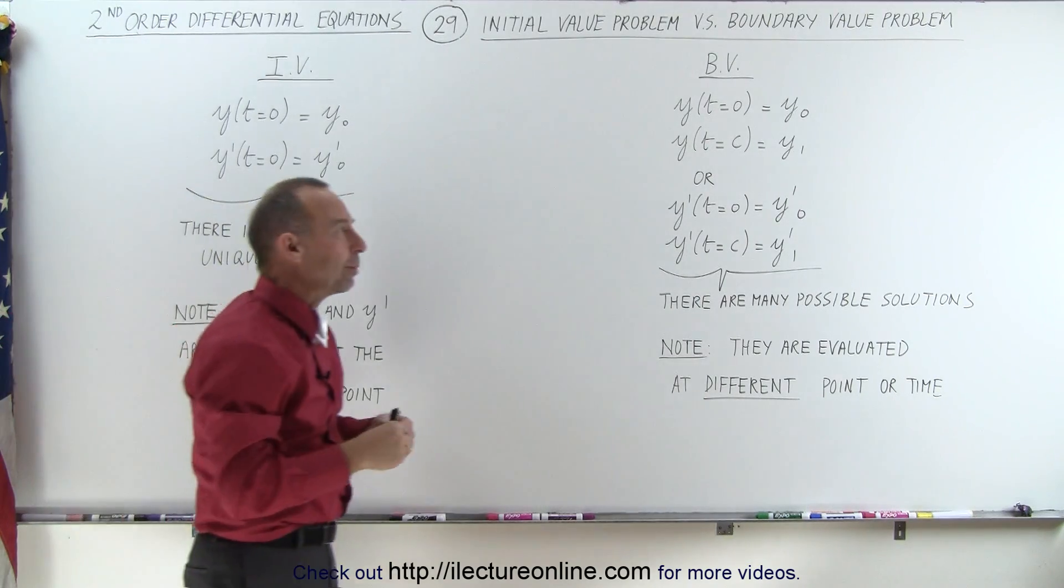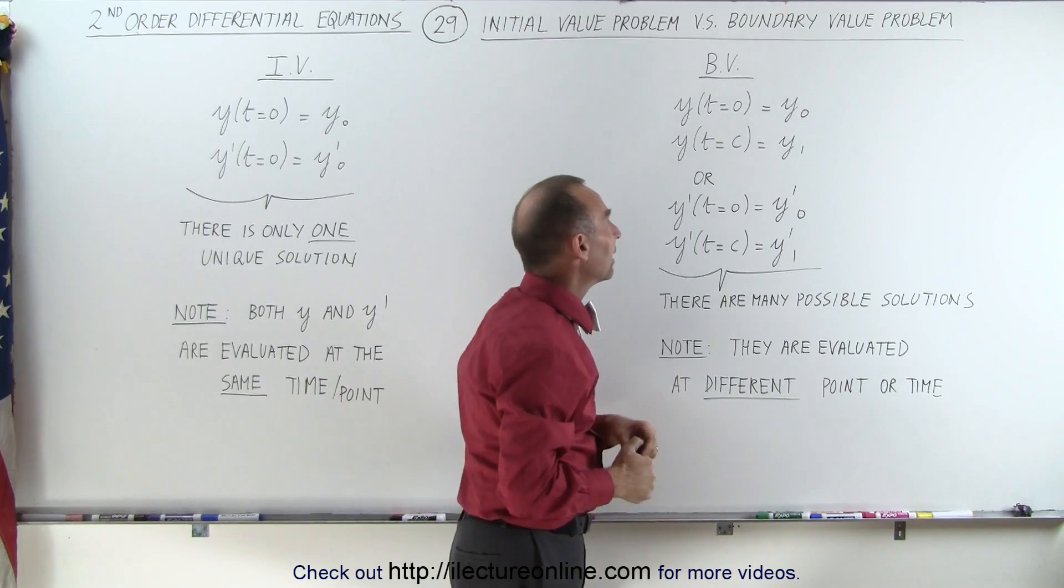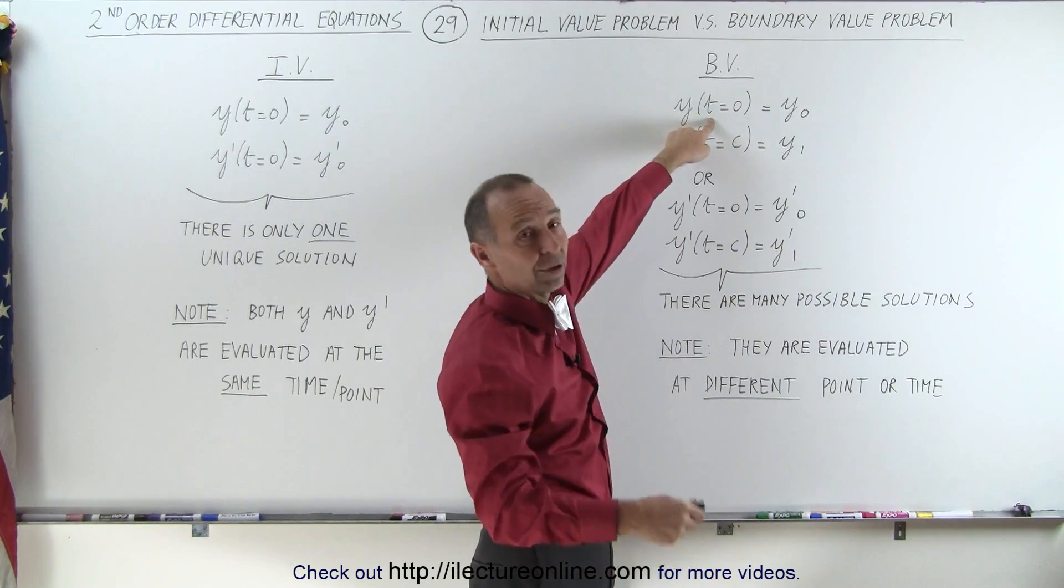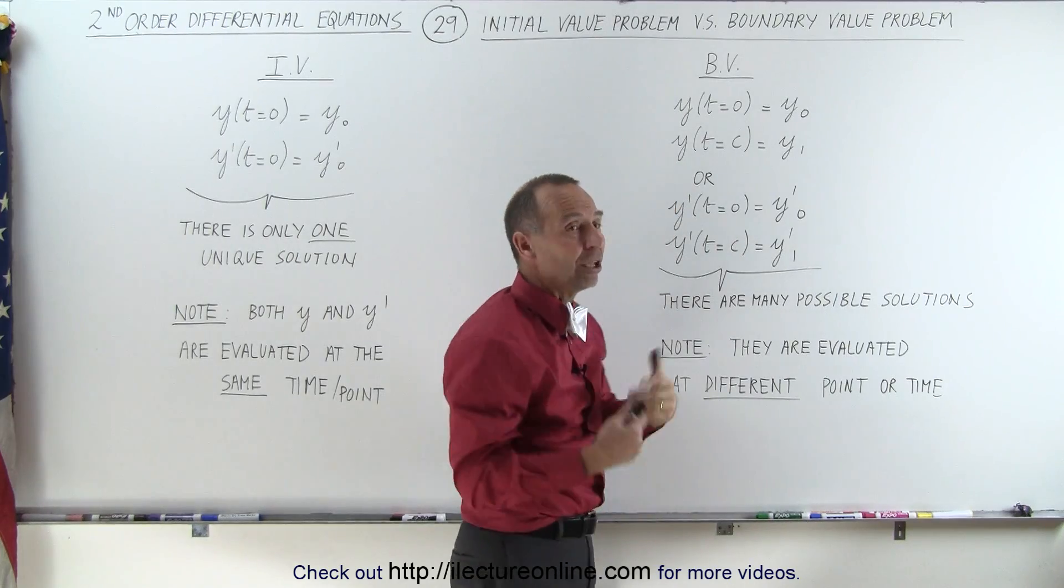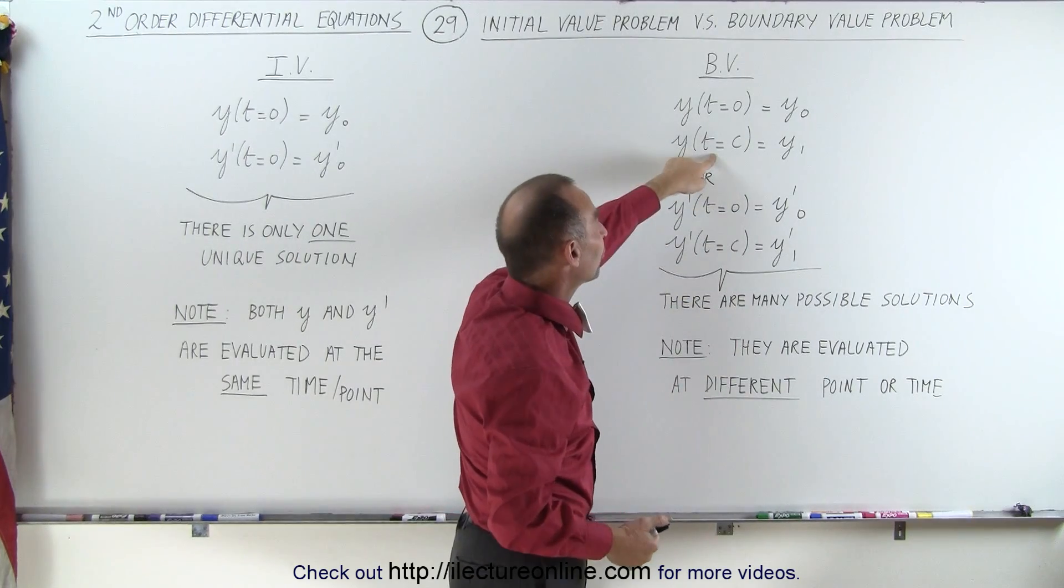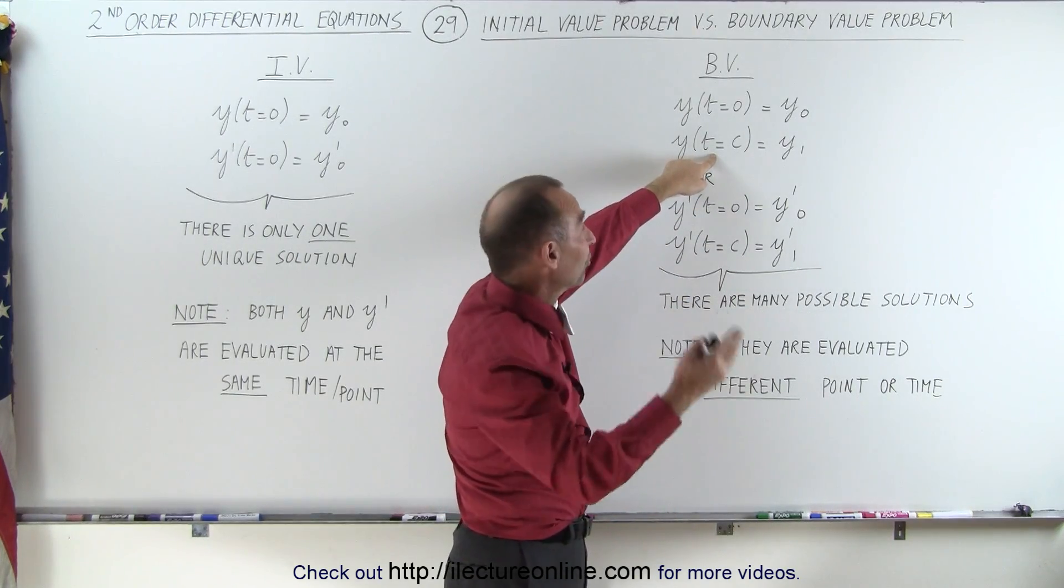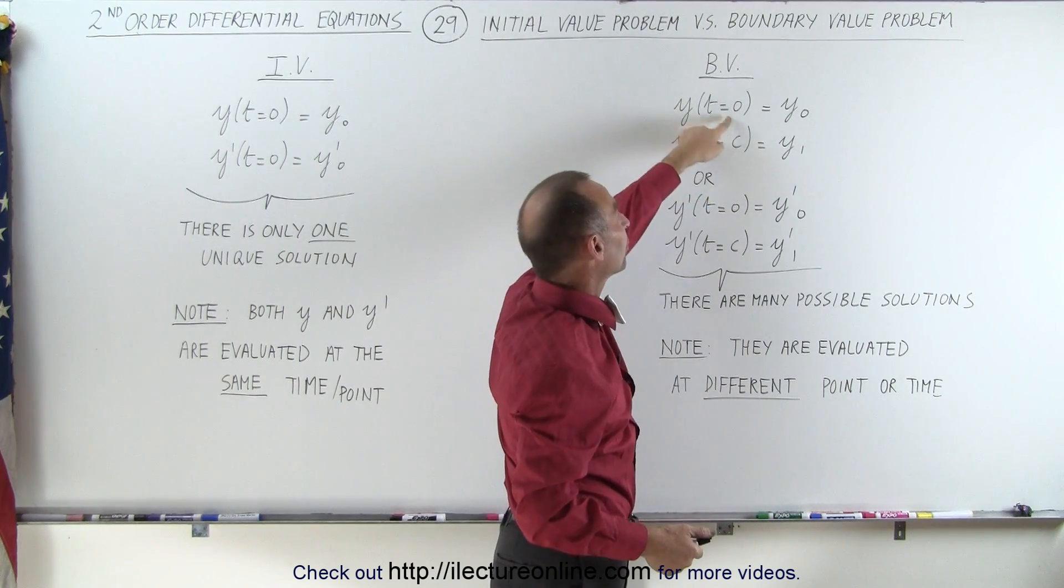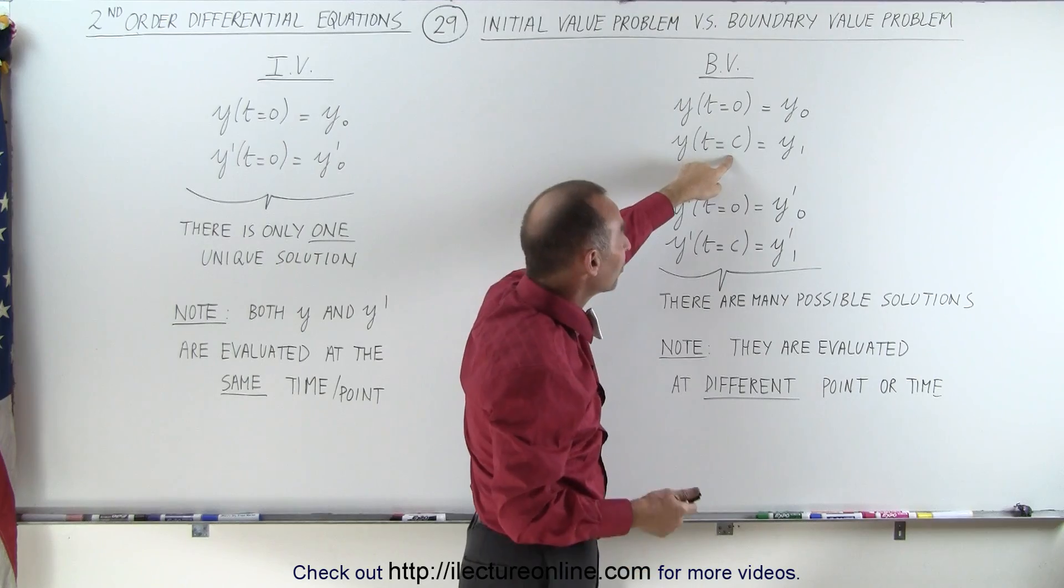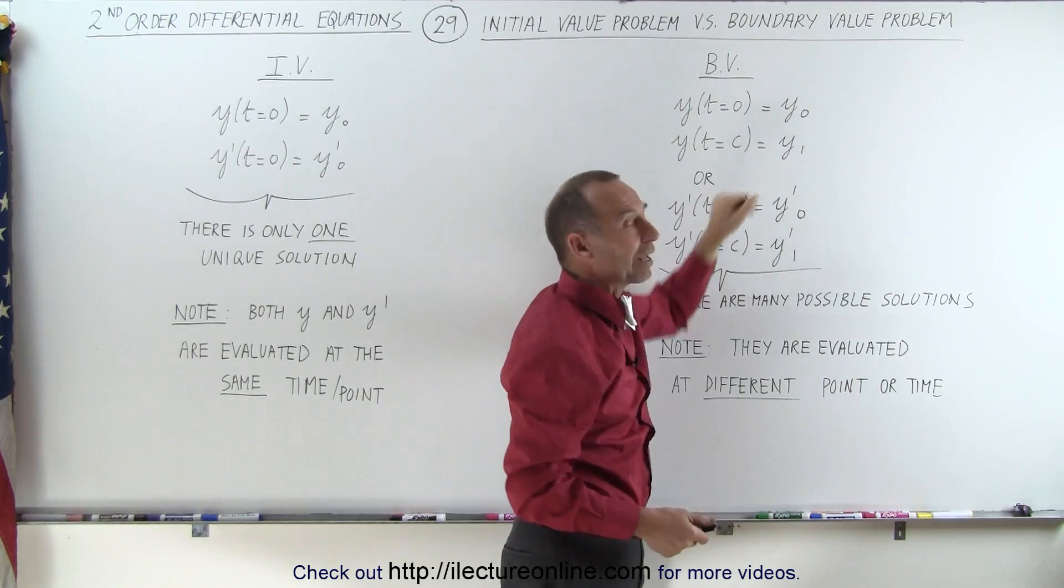A boundary value problem is set up a little bit differently. They may give you the initial condition of the function at, let's say, time equals zero. But then they give you another value at some other time or at some other point. It doesn't have to be time, it could be a position. And so they evaluated at time equals zero and at time equals some other value. And you get two different values for the function.